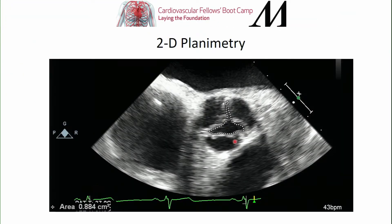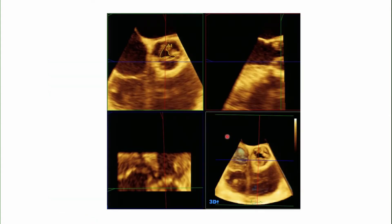Planimetry can be used in 2D: get the image, trace the orifice, and the computer calculates the area. Or in 3D, which is more accurate because we can place our cursor plane exactly where we think the narrowest part of the aortic outflow is.